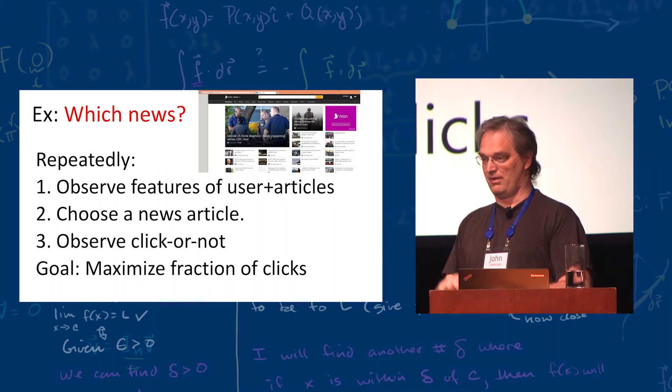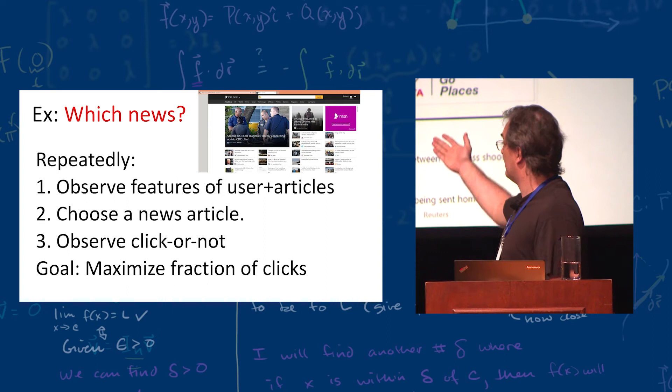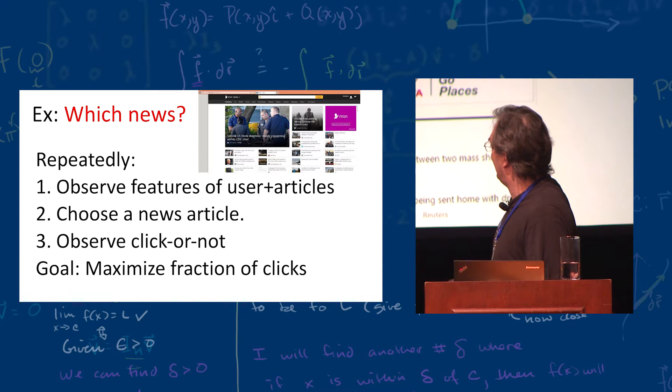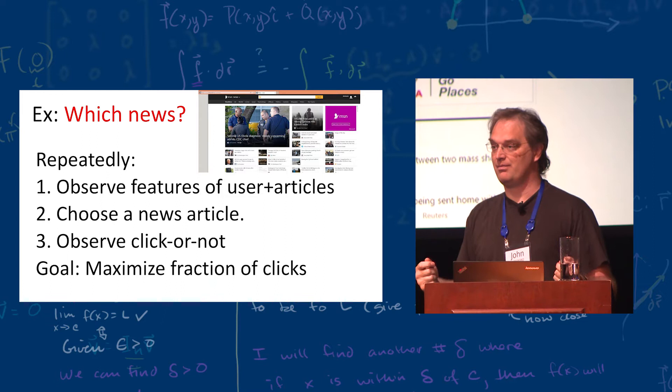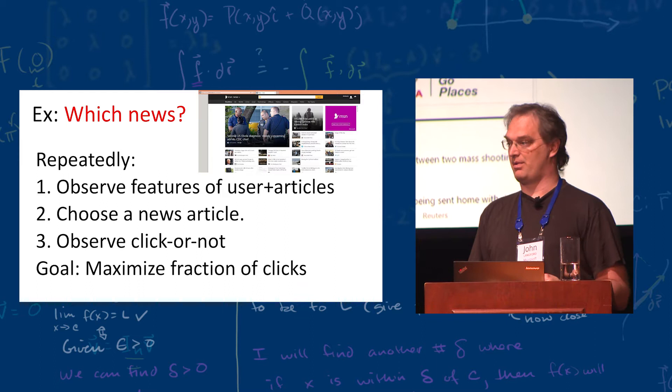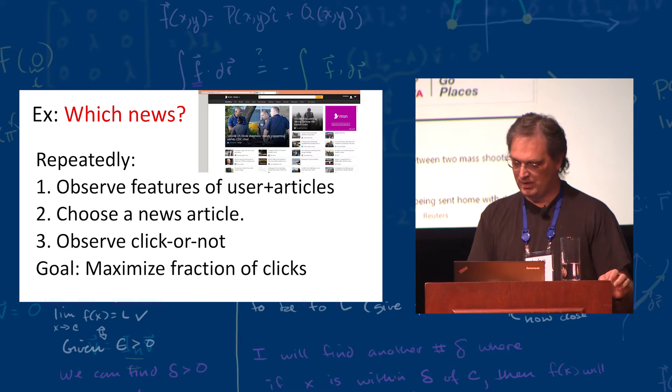This is a real problem. This is the MSN web page — not current, some time ago — but there are several pieces of that web page which are now optimized. What I want to talk to you about is a system for solving this kind of problem, and how this differs from other kinds of machine learning systems.